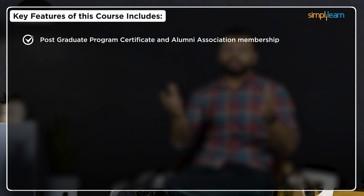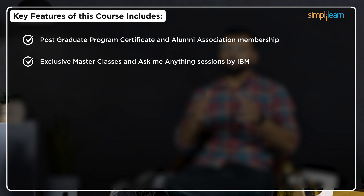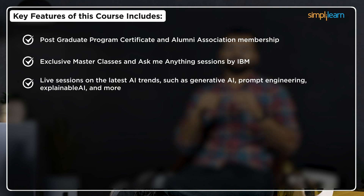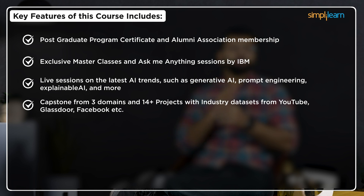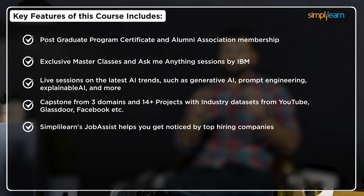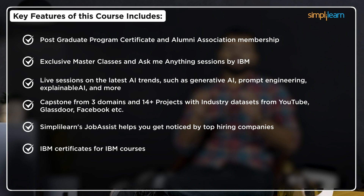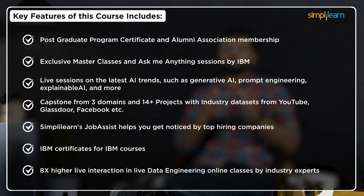This program is delivered via live sessions, industry projects, IBM hackathons, and Ask Me Anything sessions. Key features include a postgraduate program certificate and alumni association membership, exclusive masterclasses and Ask Me Anything sessions by IBM, live sessions on the latest AI trends such as Generative AI, Prompt Engineering, and Explainable AI. There's also a capstone from three domains and 14-plus projects with industry datasets from YouTube, Glassdoor, Facebook, and more, plus SimpliLearn's Job Assist and IBM certificates for IBM courses, with eight times higher live interaction in data engineering online classes by industry experts.